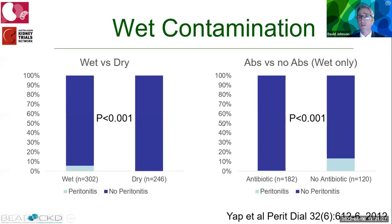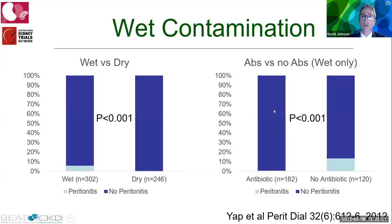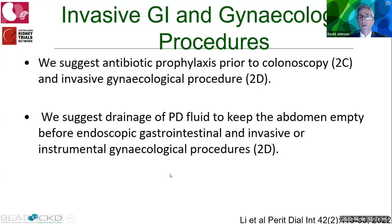Justification for antibiotic use after wet contamination comes from a study by Yap et al. of approximately 550 contamination episodes — about 300 wet and 246 dry. Peritonitis only occurred in wet contamination episodes, with an overall rate of approximately 3.1%. Among wet contamination cases, 182 received antibiotics and 120 did not; peritonitis only occurred in those who did not receive preventative antibiotic treatment.